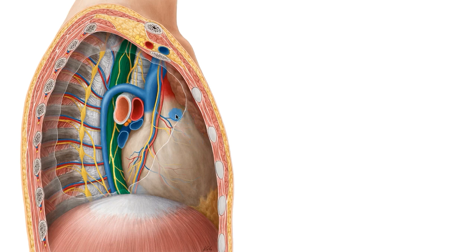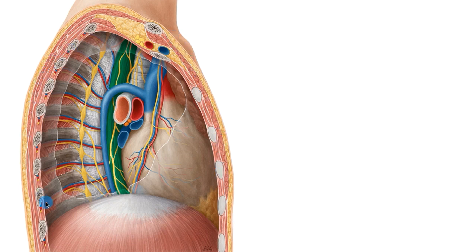You can see here the heart, which is enclosed by the pericardium. You can also see the superior vena cava, an important blood vessel, and the trachea. This part here is your chest, and this is your back.